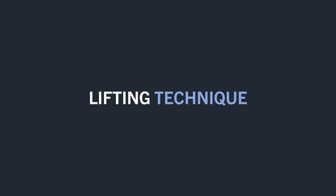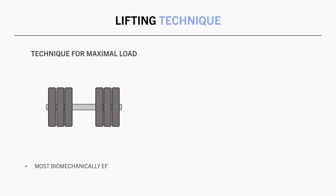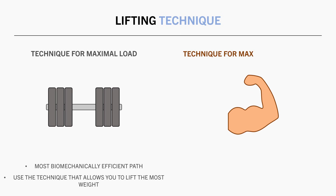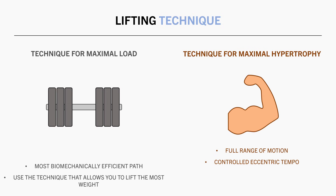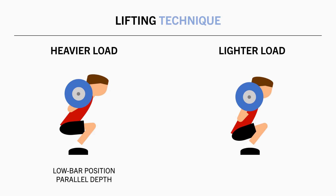The technique that allows the most weight to be lifted is usually not the same as the technique which maximises stress on the target muscle. To lift the most amount of weight possible, we simply want to use the most biomechanically efficient pathway. However, for hypertrophy training, we generally see superior growth using these general technique guides: full range of motion, a controlled eccentric tempo with minimal stretch shortening cycle, strict technique with minimal involvement of other muscles and joints, and a technique which maximises stress of the target muscle. For example, a powerlifting-style low bar squat to parallel usually allows trainees to lift the most amount of weight. However, a high bar upright full depth squat with no bounce from the bottom will probably induce a superior quad hypertrophy stimulus, even though it requires lighter loads.